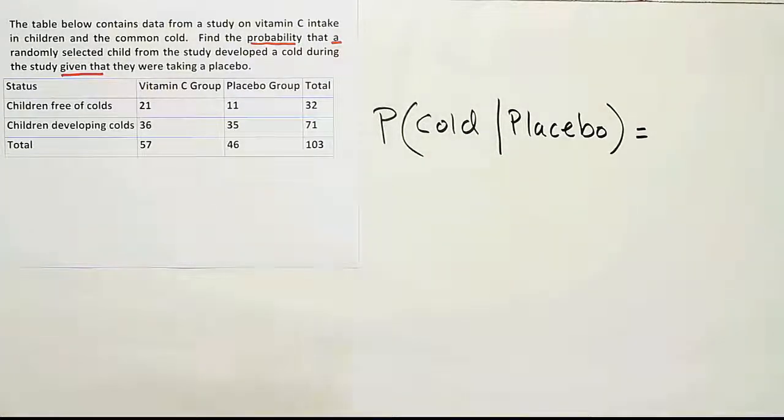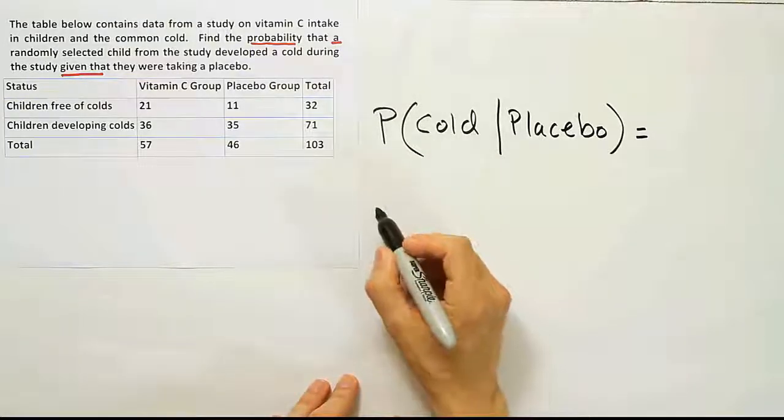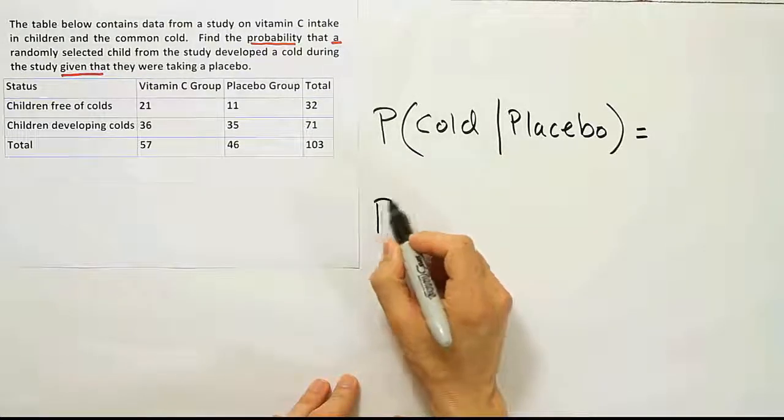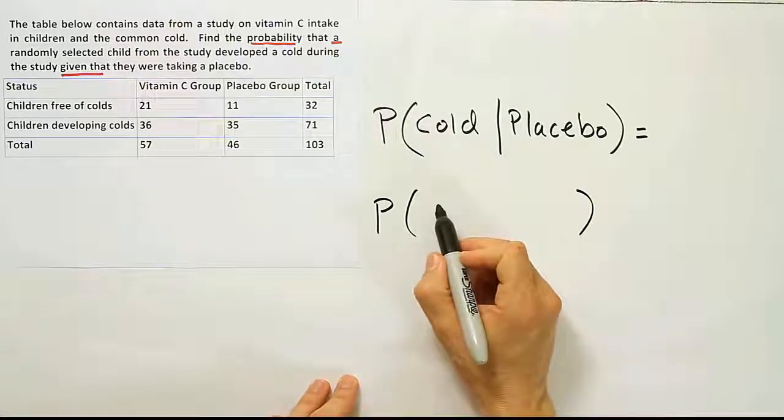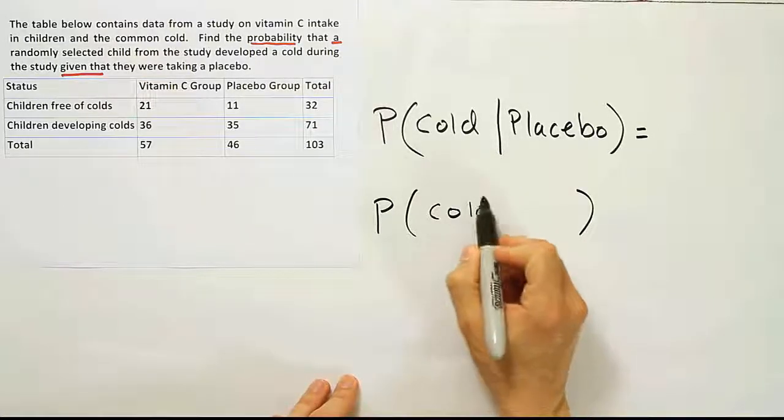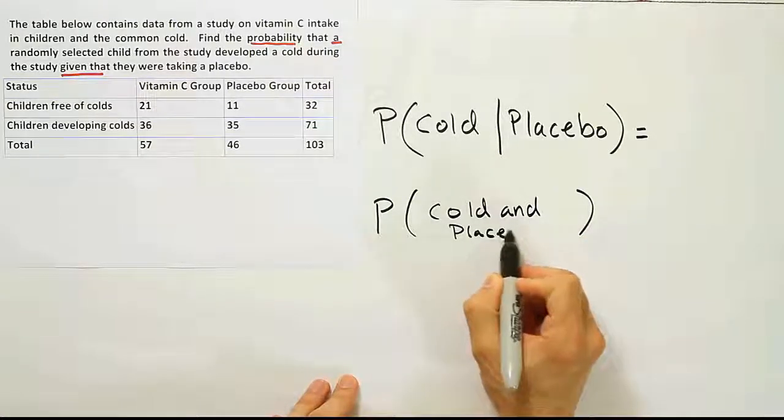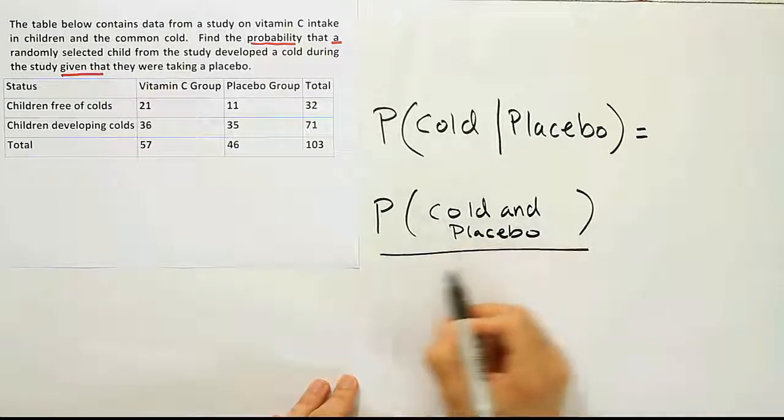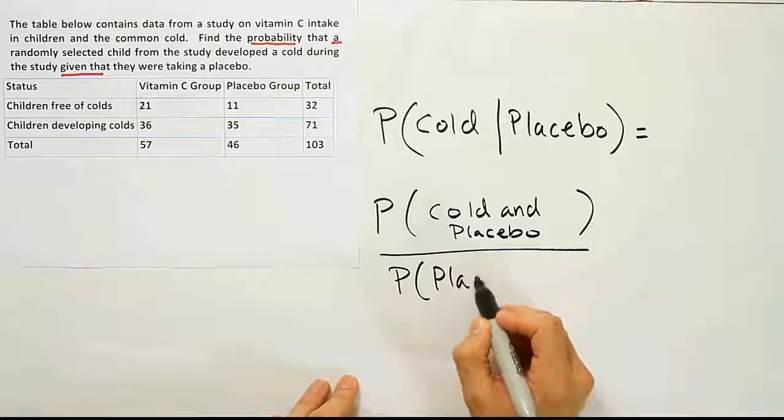Alright, now once we have that written out, the next step is going to be to express this as the following fraction, probability of cold and placebo, divided by just the probability of the second one, probability of the placebo.